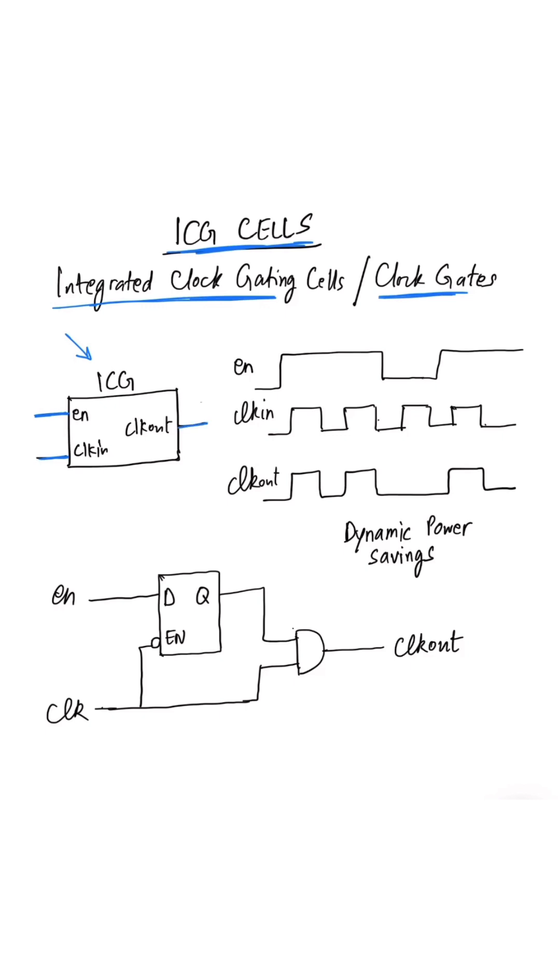Through an ICG or clock gate we can prevent the clock signal from toggling when there is some logic in the design which is inactive or not switching. So as long as the enable signal is 1, the clock at the clock in pin will pass to the clock out pin.